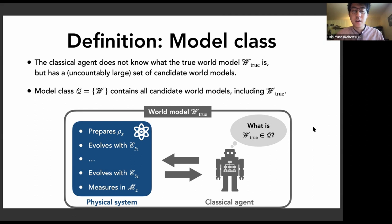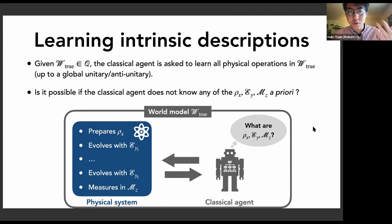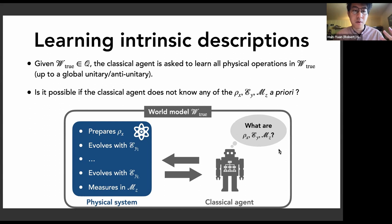The goal of the classical agent, given that W_true belongs to the model class, is to determine what aspects of the physical system can be learned. The first task we look at is what we call learning intrinsic description. Given that the true world model belongs to the model class but is unknown, we ask if the classical agent can learn all the physical operations — for each action x, y, z, what is the corresponding rho_x, E_y, and M_z — up to a global unitary or anti-unitary transformation.